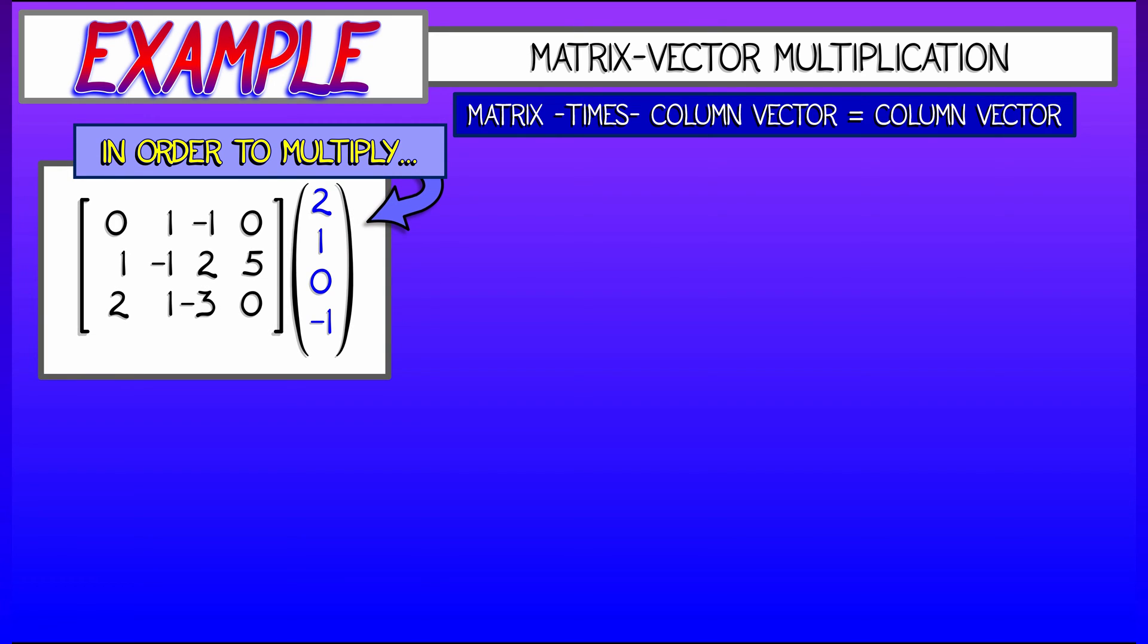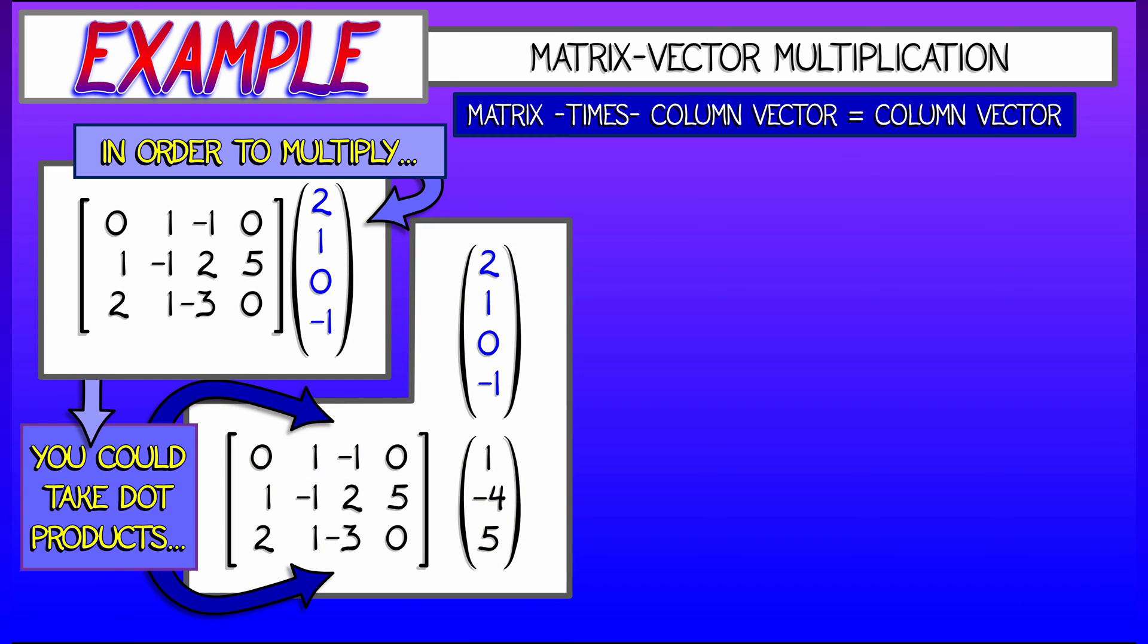Here's a simple example with a 3 by 4 matrix multiplied by a column vector with four entries: 2, 1, 0, negative 1.